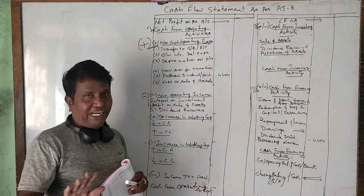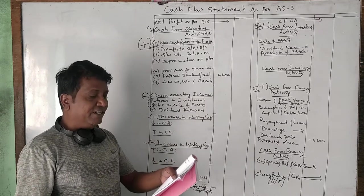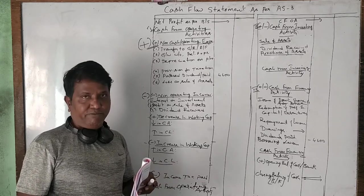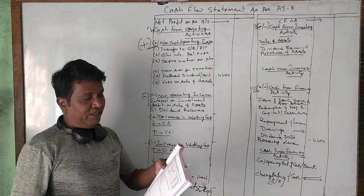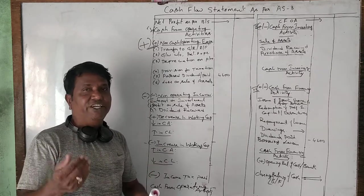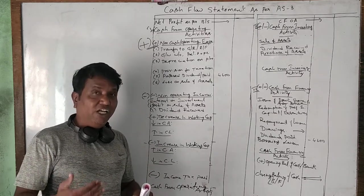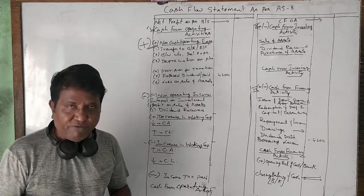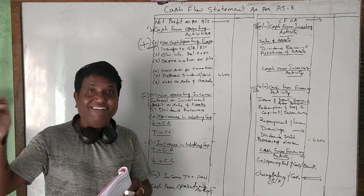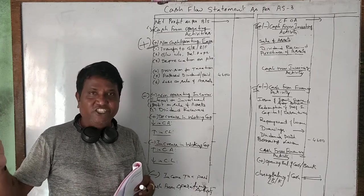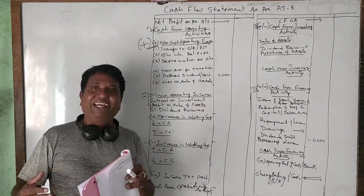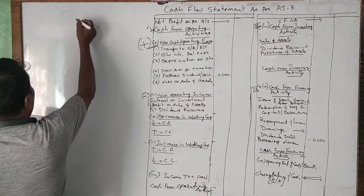The second adjustment: assets of another company purchased — machinery 5,000, stock 4,000, and goodwill 1,000. See, share capital is increased from 40,000 to 50,000, an increase of 10,000. This 10,000 share capital was not issued for cash; it was issued for assets purchased from another company — machinery, stock, and goodwill — instead of paying cash. So we have paid by issuing share capital.